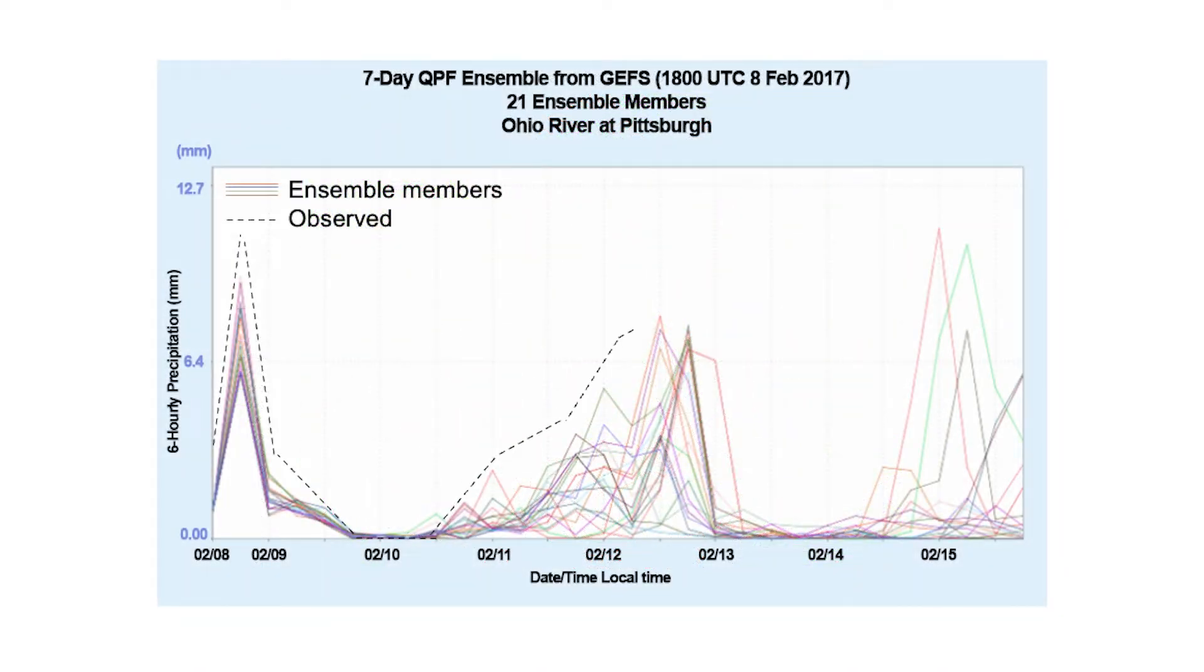The problem is, these forecasts from meteorological models often contain bias and tend to underestimate uncertainty.